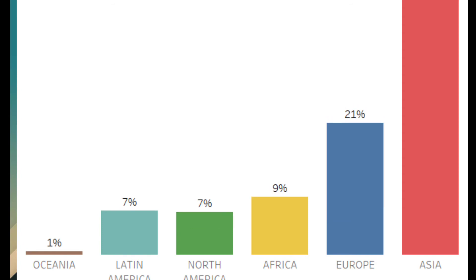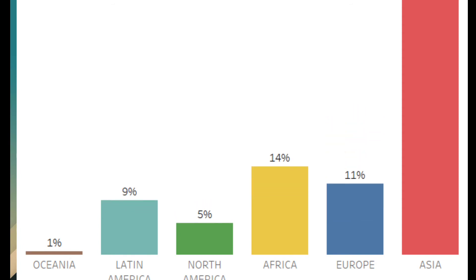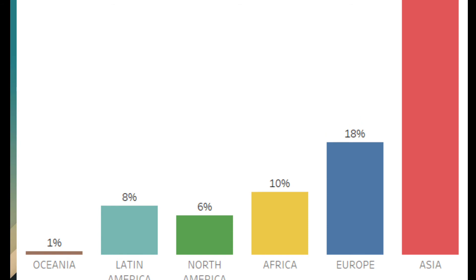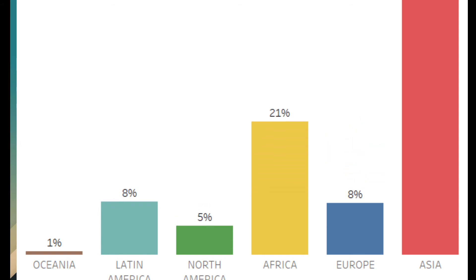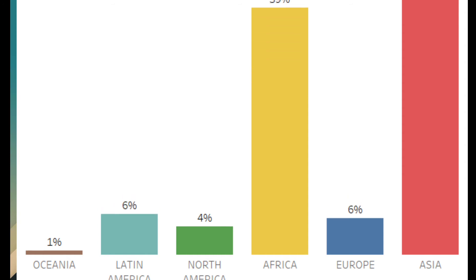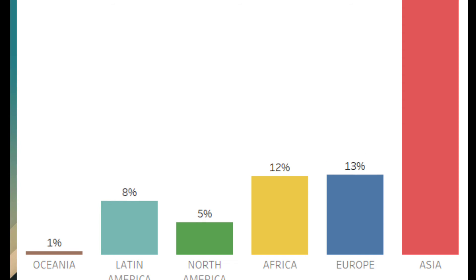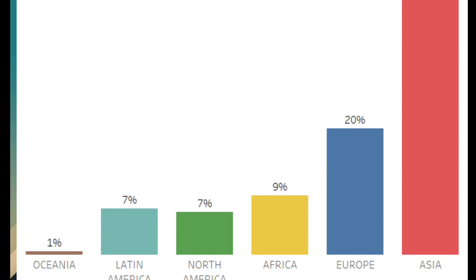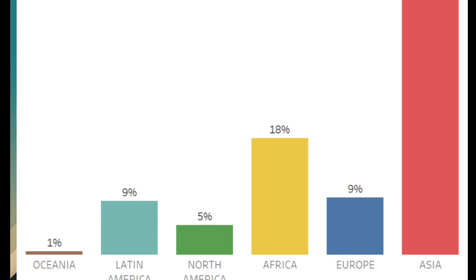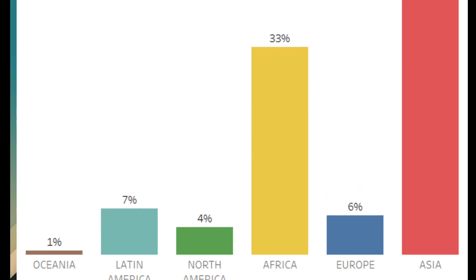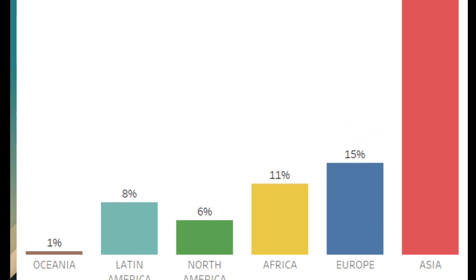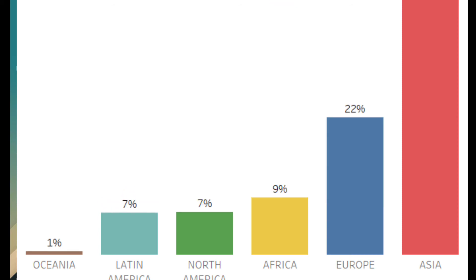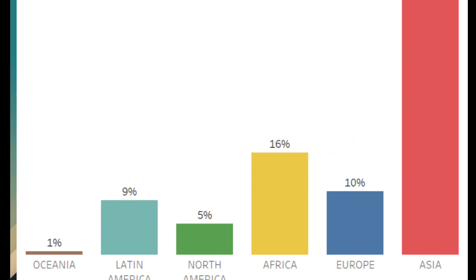The average annual growth rate of population during the period 1750 to 1950 was much higher in the developed countries — at 8% — than that of the developing countries. But this population growth rate got reversed between the developed and developing countries during the period from 1950 to 1970. The growth rate became 1.1% in the developed countries and 2.2% in the developing countries. Such differences had also been observed at the continental level.